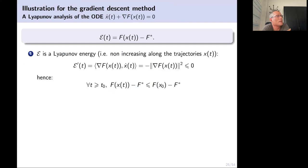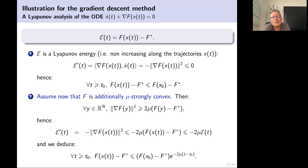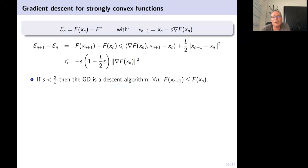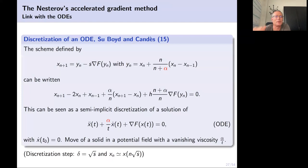If f is μ-strongly convex — equivalently satisfying the Łojasiewicz property with exponent 1/2 — then straightforwardly E'(t) ≤ −2μ·E(t), giving exponential decay for f. You can do the same analysis in discrete and get the same kind of results.